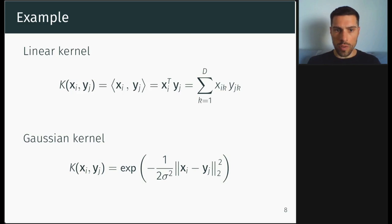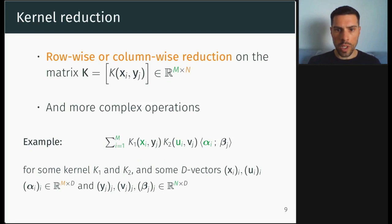And for instance, you have the linear kernel, which is simply the standard scalar product, or you have the Gaussian kernel, which is based on the Gaussian function. And a kernel reduction is simply a row-wise or column-wise reduction on the kernel matrix, whose entries are given by the results of the kernel function applied to the data vector indexed by i and j.